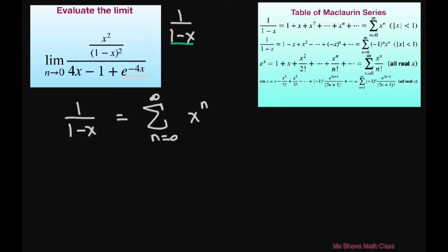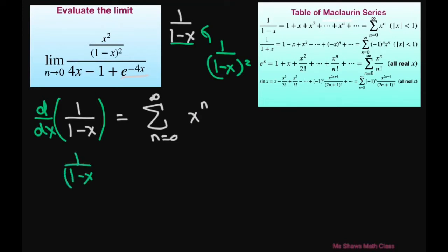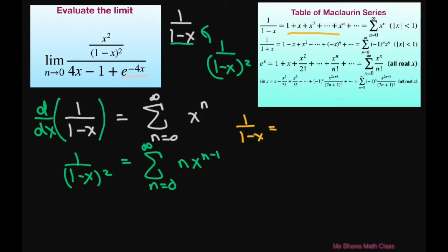I notice that 1 divided by 1 minus x squared is just the derivative of this. So if I differentiate both sides, I'm going to get 1 divided by 1 minus x squared on the left, and on the right I'm going to get n times x to the power of n minus 1. So if I write out the Maclaurin series as 1 divided by 1 minus x equals 1 plus x plus x squared plus so on, then to get 1 divided by 1 minus x squared, we just differentiate this series.